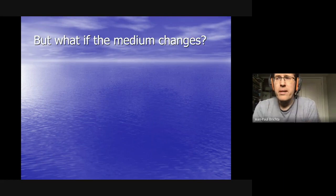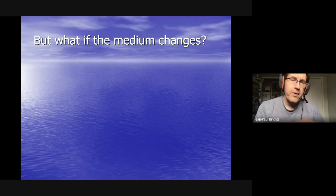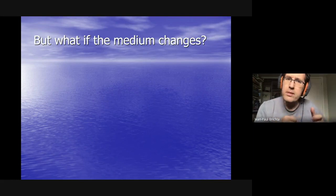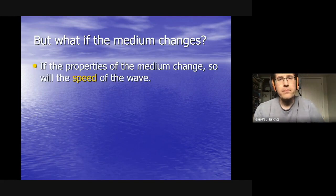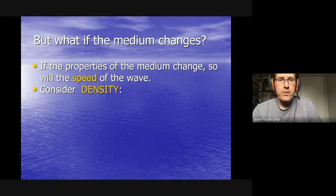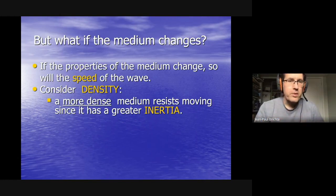What if the medium changes? Normally a wave just travels through the same medium, but if you have two ropes tied together — say, a thick battle rope and a thin speed rope — that represents a medium change. The wave will either speed up or slow down. The thick rope is more dense, so by Newton's law of inertia, it resists moving and the wave slows down in it.